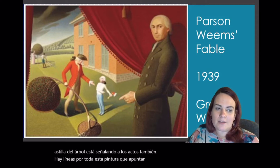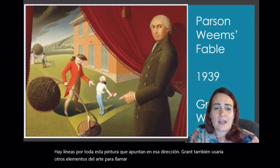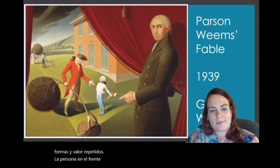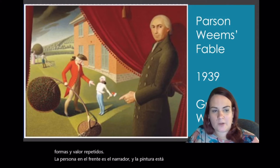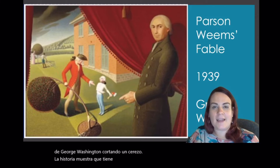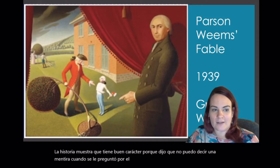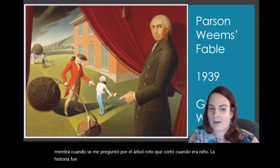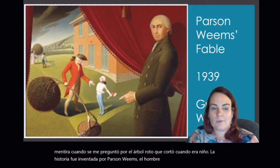Grant Wood also uses other elements of art to draw your attention to George Washington, like repeating shapes and value. The person in the front is the storyteller, and the painting is referencing the famous story of George Washington chopping down a cherry tree. The story shows that he has good character because he said, 'I cannot tell a lie,' when asked about the broken tree that he chopped down as a child. The story was made up by Parson Weems, the man behind the curtain, to show that Washington was an honest man.